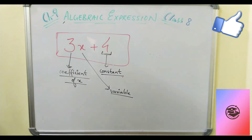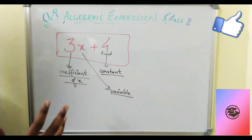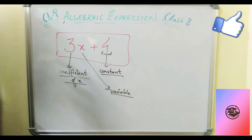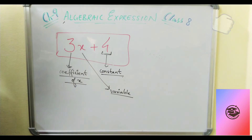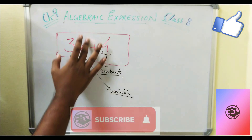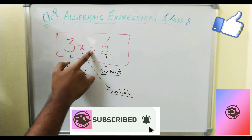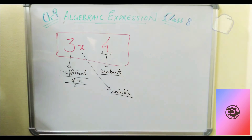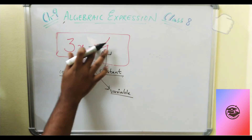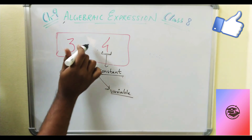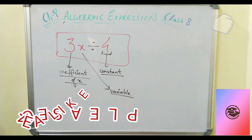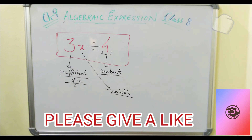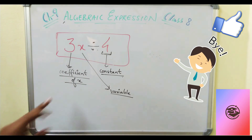So the basic definition of an algebraic expression is: it is a combination of variables, constants, and coefficients, combined together by some sort of operation — it can be addition, subtraction, multiplication, or division. So finally we have concluded that an algebraic expression is a combination of all these. You have to understand this.